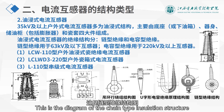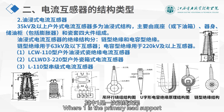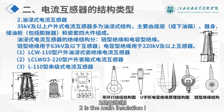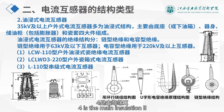This is the diagram of the chain type insulation structure, where 1 is the primary lead support, 2 is the main insulation 1, 3 is the primary winding, 4 is the main insulation 2, and 5 is the secondary winding.